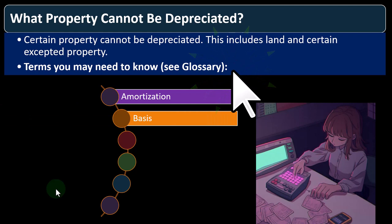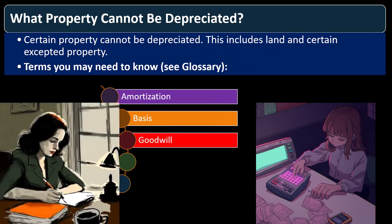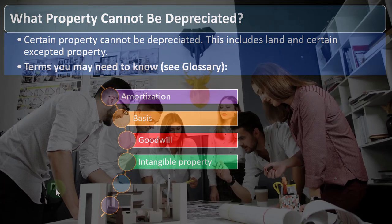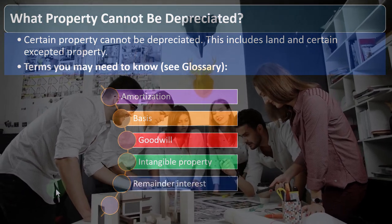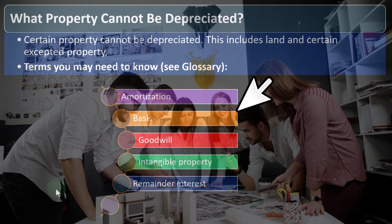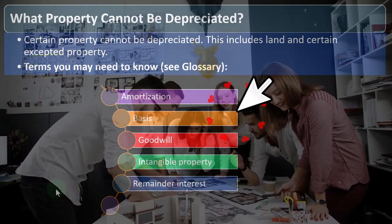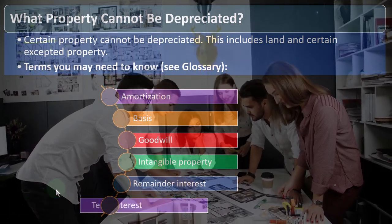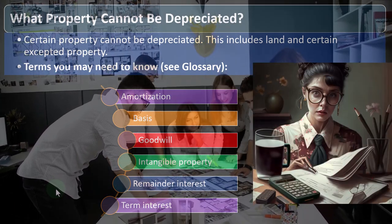Some terms you may need to know: amortization is similar to depreciation — amortizing over time. Basis is kind of like the cost of the property. Goodwill is a type of intangible concept. Intangible property is property you can't touch, but it still has value. There are also remainder interest and term interest concepts to be aware of.